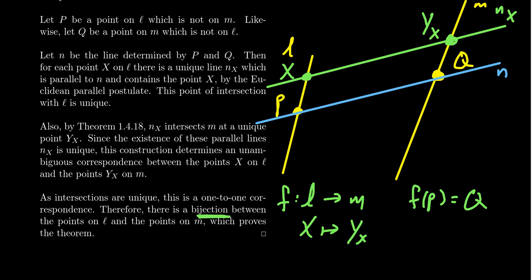This means the cardinality of the domain is equal to the cardinality of the codomain — the number of points on L is equal to the number of points on M. It's a nice, elegant argument, and one of the most fundamental results for affine geometry: all lines have the exact same number of points. Young's geometry had three points per line, four-point geometry had two points per line, and we'll see in the next video the consequences of this very important observation.